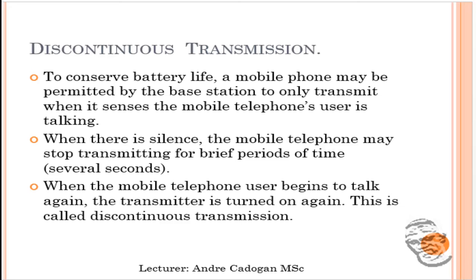Something to consider is discontinuous transmission, which conserves battery life. Sometimes while on a call, one person is talking continuously and your phone may go into a silent mode — appearing as if the call dropped. The phone has entered discontinuous transmission; the other party is still heard, but because the remote end is not talking, the phone enters listening mode to conserve battery. Once the mobile user begins talking again, the phone exits discontinuous transmission mode.